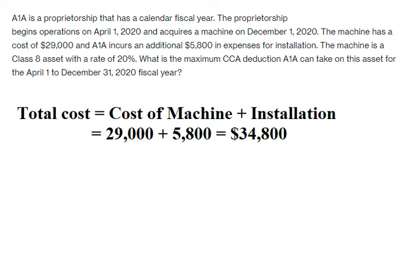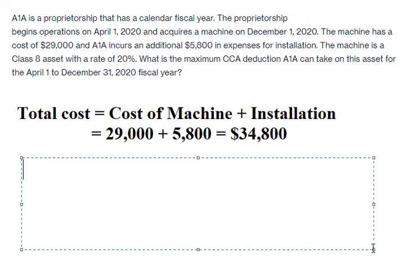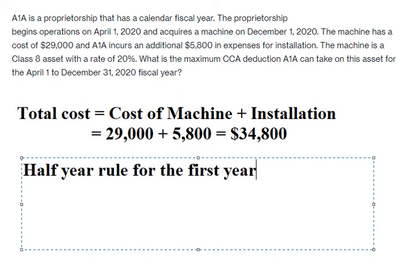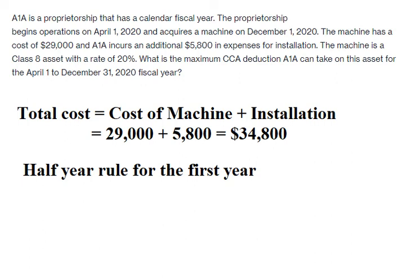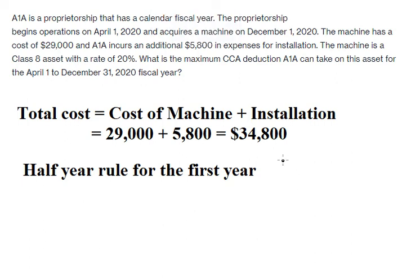Next, we see that this is just the first year of operation. So we can apply the half-year rule for the first year. Because of the half-year rule, that means we multiply by 1 over 2.